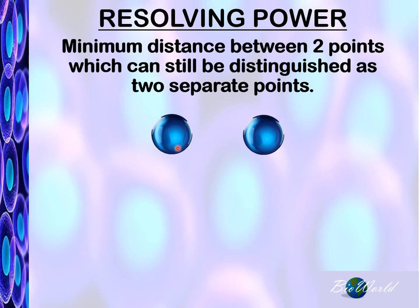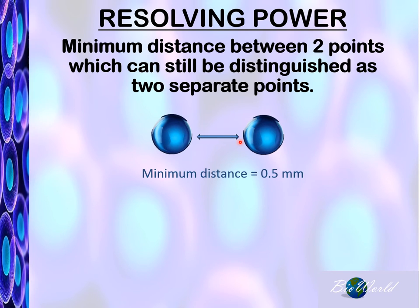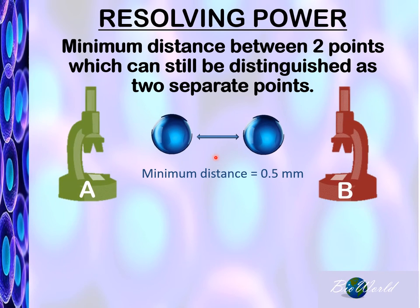Let's say these two spheres represent two cells as seen under the microscope. And let's say these two cells are at a distance of 0.5 millimeters. Now let me introduce Microscope A and Microscope B with different resolving powers.